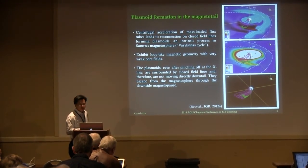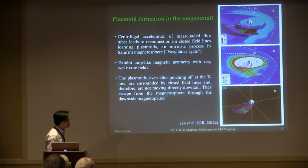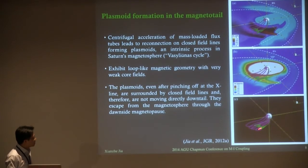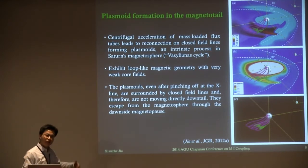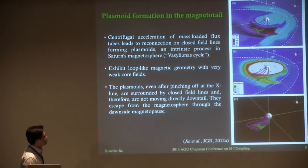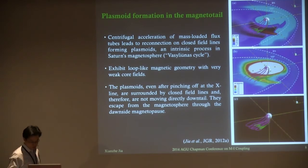Interestingly, surrounding these closed loops — the magenta field lines — there are still closed field lines with both ends attached to the planet, which confines the motion of the plasmoid ejected from reconnection. Before being pinched off, they have this rotation and angular momentum, and as soon as they are pinched off, they are still moving in the co-rotation direction. They eventually leak out of the magnetosphere from the dawn-side magnetic paths. This shows very nicely how in the rapidly rotating magnetosphere, reconnection happens spontaneously on the mass-loaded flux tubes.